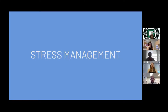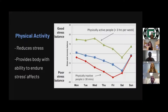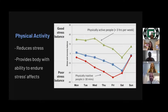Starting with the most popular and most widely known: physical activity. Exercise is known for helping many issues, stress being one of them. Fitness helps the body endure stress's effects. It will also produce healthier muscles, bones, joints, and increased endurance, muscular strength, and stamina. A better blood pressure, heart and lung efficiency, energy, sleep, and concentration will also come out of it. As seen on the graph, physically active people doing at least three hours of physical activity per week had a better stress balance than their physically inactive counterparts.